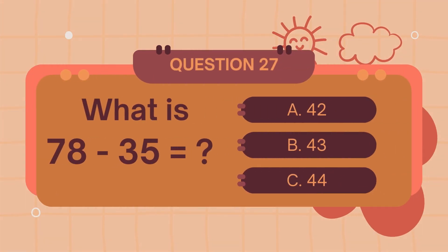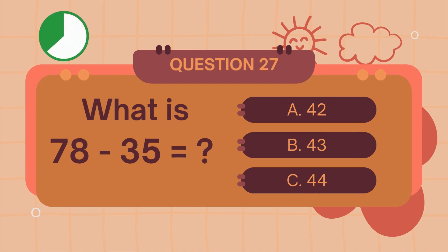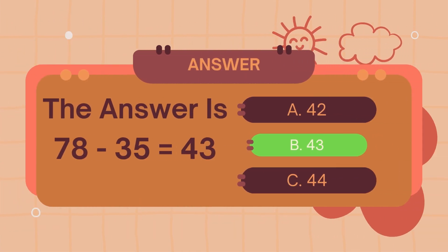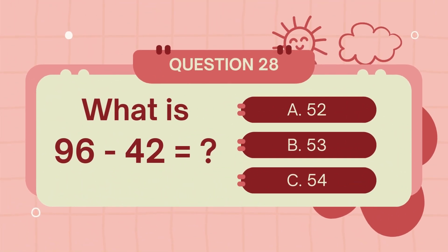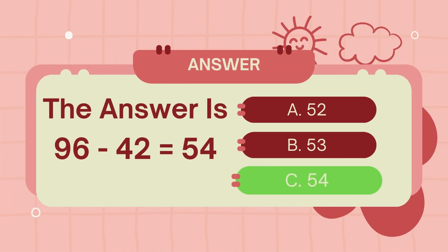What is 8 minus 5? The answer is 3. What is 96 minus 42? The answer is 54.